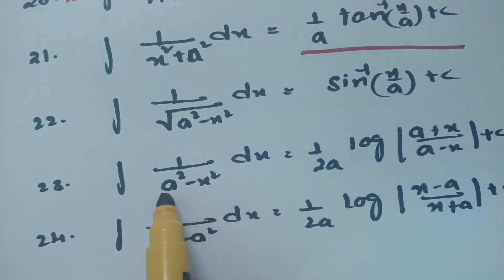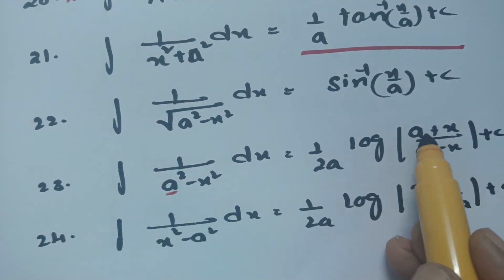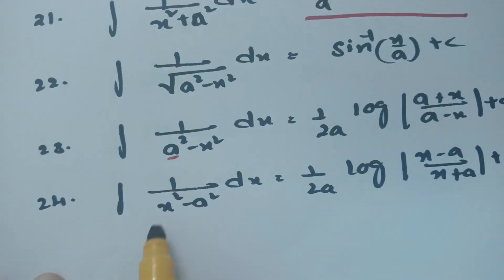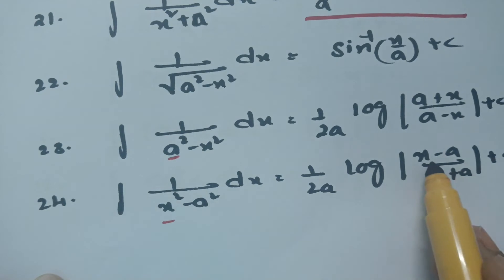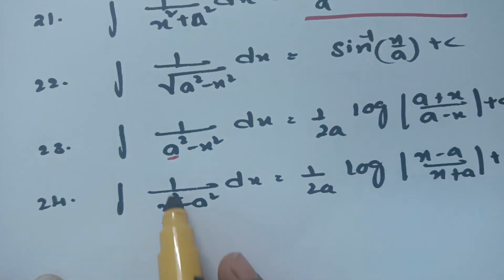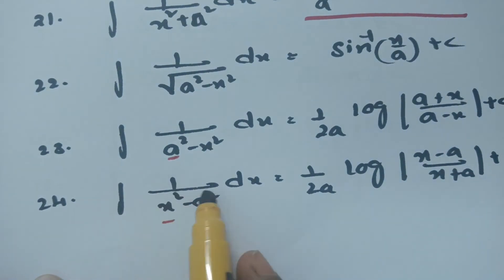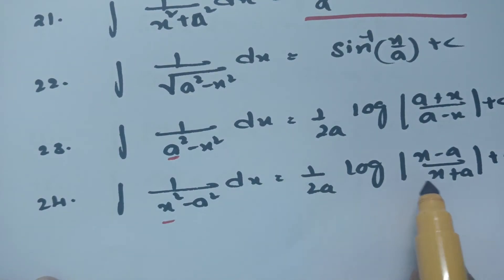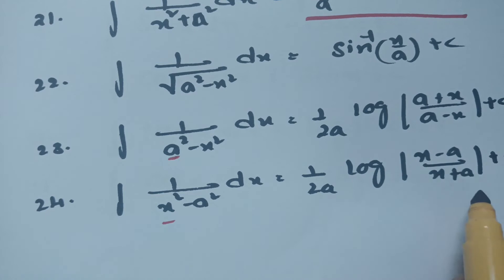Note: since we start with a in the formula for 1/(a² − x²), the log argument is (a + x)/(a − x). If we start with x instead, it becomes (x − a)/(x + a). So integral of 1/(x² − a²) dx is nothing but (1/2a) · log[(x − a)/(x + a)] plus c.